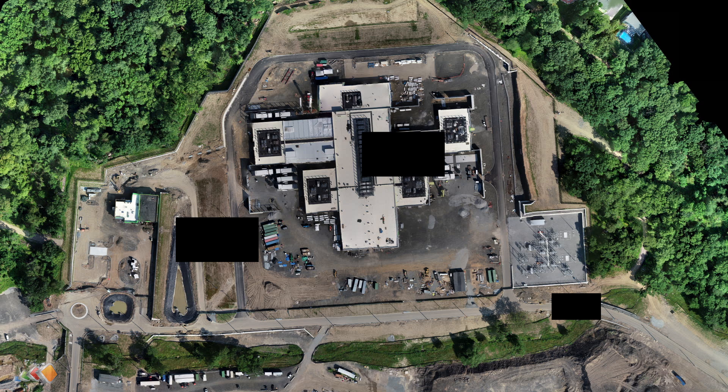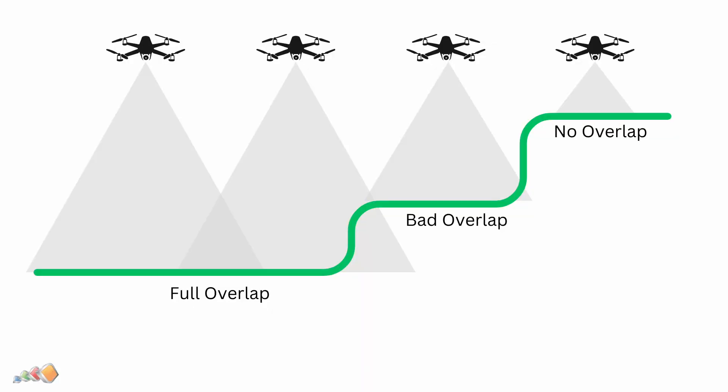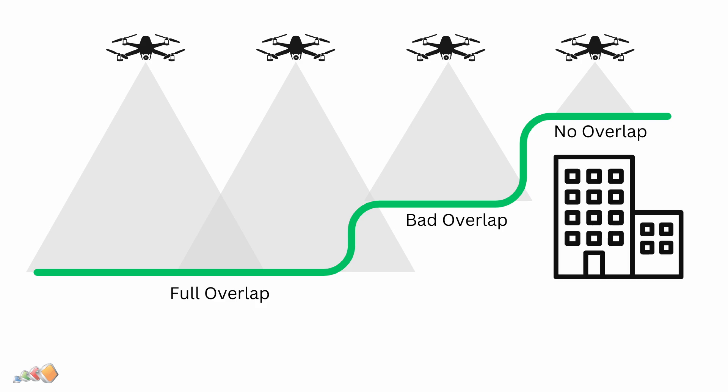But what happens if the area you're mapping isn't flat? Uneven terrain can throw off your overlaps because the height difference affects the drone's camera perspective, as we learned in the ground sample distance video. Also, when mapping things like a roof, the target distance and the ground distance are not the same. These differences can throw off overlaps considerably. Areas at higher elevations might have less overlap than you intended and areas at lower elevations might have too much.